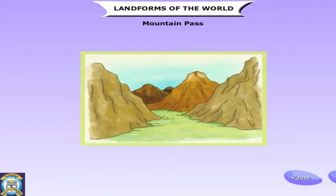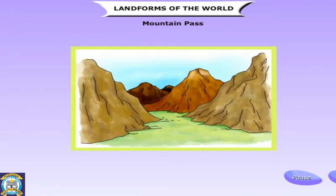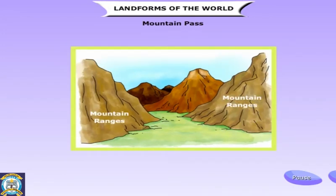The mountain ranges are sometimes so high that it is very difficult to cross them. There are narrow passages or gaps between the mountains, and these are called passes.